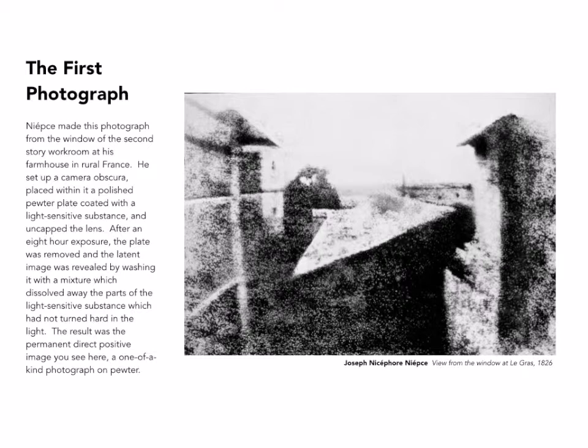This is the first photograph. Joseph Nyssefornieps, a Frenchman, lived in the country and had been experimenting with various light-sensitive materials that he would apply to various objects — in this case pewter. He would place his plate in a camera obscura and take the cap off the lens at the front of the camera obscura and leave it, in this case, eight hours. The light-sensitive material that he had placed on the pewter plate was not terribly sensitive, so it took a long time to expose.